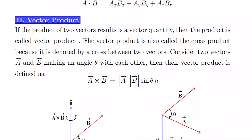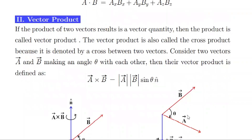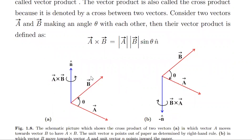The second type of product is called vector product, also called cross product. Due to this cross symbol, we call the vector product a cross product. Cross product is simply written as, for two vectors, a cross b. If we want to multiply b with a, then we write b to a, and the resultant is determined by the right-hand rule. The right-hand rule means rotating the fingers from the direction of vector b to vector a.